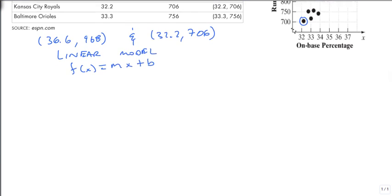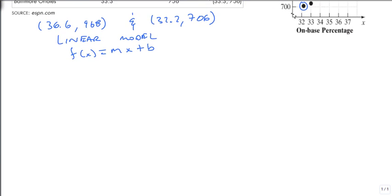And so our linear model is f(x) = mx + b. And we have our linear model, and to go with it we have two points. So whenever I have two points, that means my first thing is to find the slope between those two points.